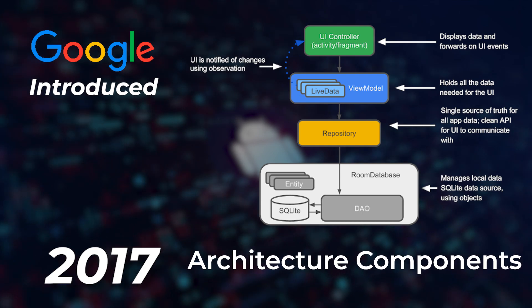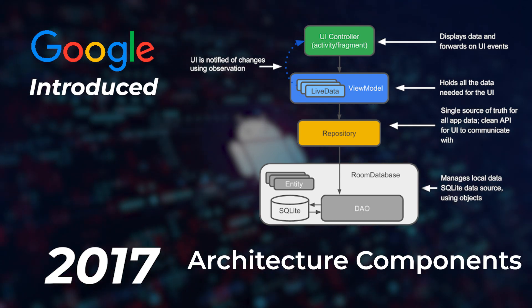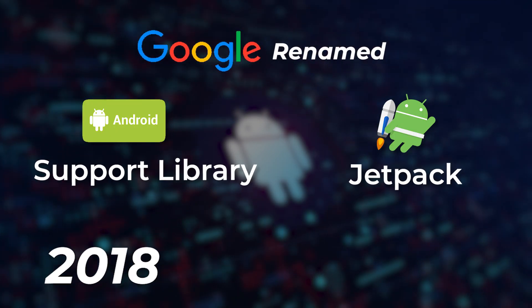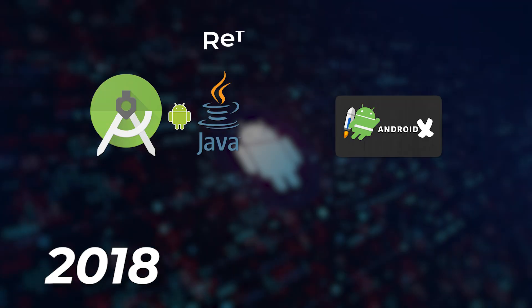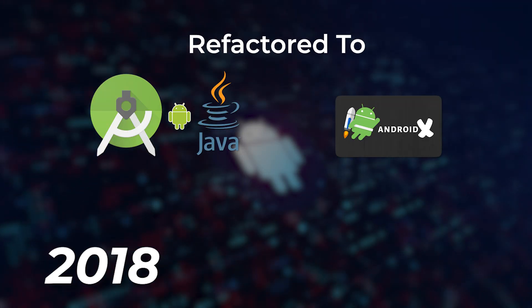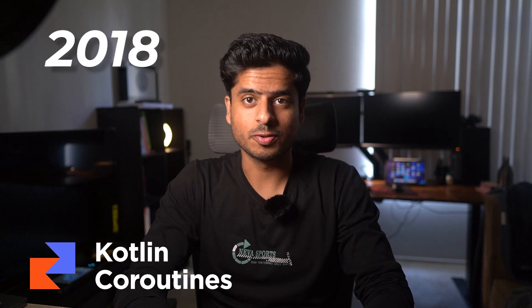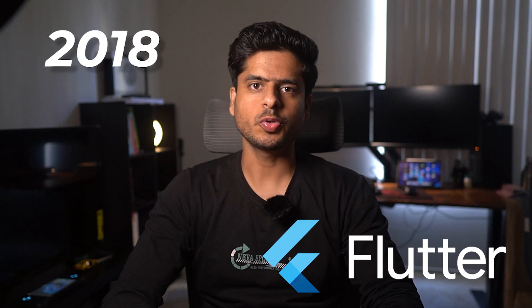In 2017, Google introduced architecture components, which provided an official, opinionated way to architect apps to avoid all the pain. In 2018, Google renamed the Android support library to Jetpack and the Java package was refactored to AndroidX with a lot of new stuff. In the same year, Kotlin coroutines became well-renowned in the community, and Google also released Flutter, a new cross-platform framework.